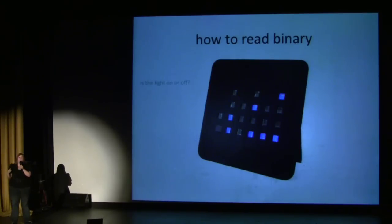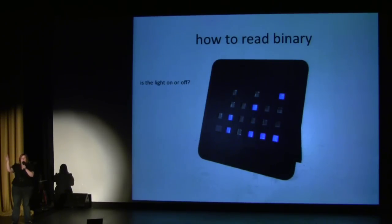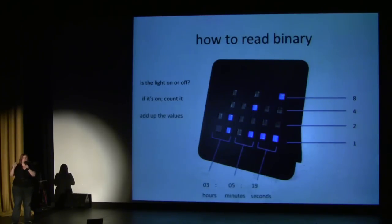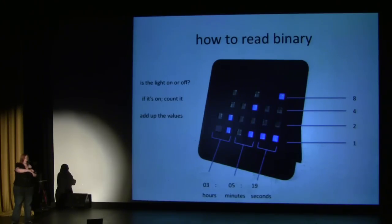Now, if you don't know how to read binary, I have a binary clock at home on my mantle. Basically, it goes like this: is the light on or off? If it's on, count it. And then what you do is you add up the values. So, just taking a look here, you'll see that it's 30519.